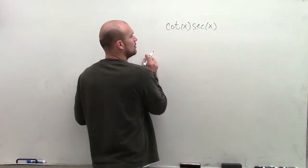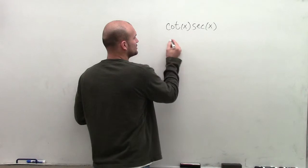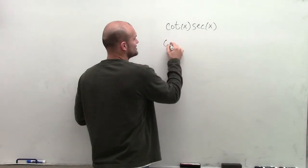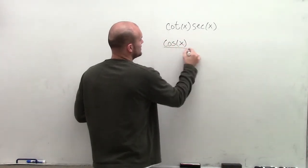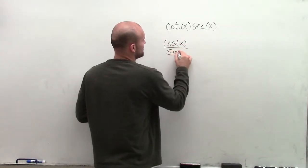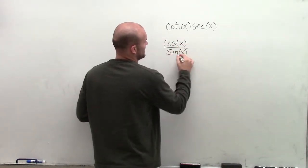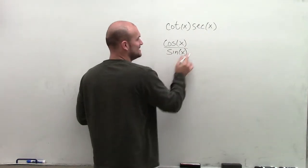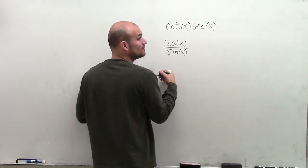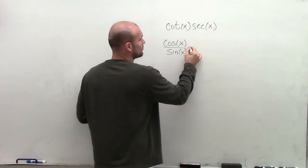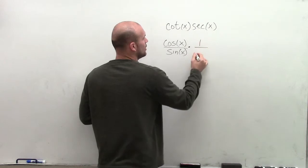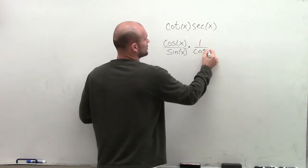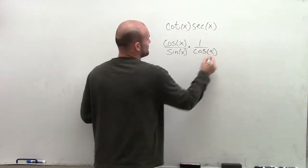By using the quotient identity, I know that the cotangent of x is equal to the cosine of x divided by the sine of x. Then I'm going to multiply by the secant of x, which I'll rewrite using the reciprocal identity, which is going to be 1 over the cosine of x.